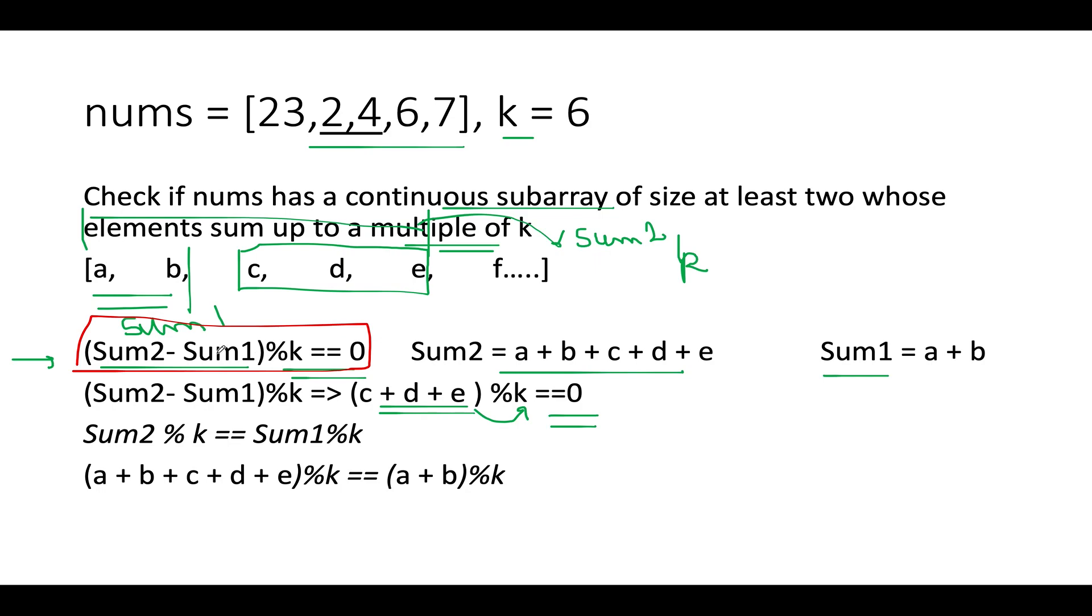Now if I move this to the RHS side, what do I get? I get sum2 modulus k should be equal to sum1 modulus k.